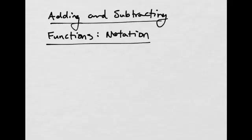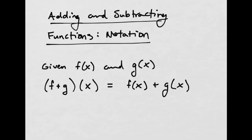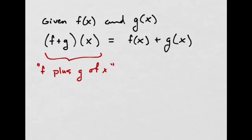This part is going to be very easy. We're going to be looking at adding and subtracting functions and just the different ways that you can denote this so that you actually know what to do when you see something like this. It's very simple. So the first thing that we're going to look at is given some function f of x and some function g of x, this notation f plus g of x, that's how you say that, is the same thing as taking those functions and adding them together.